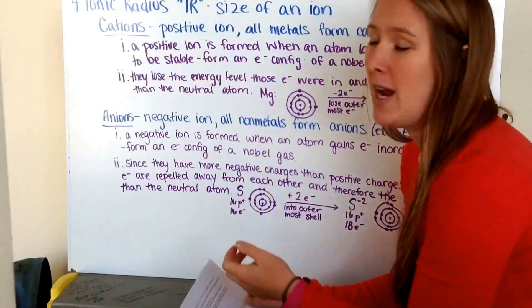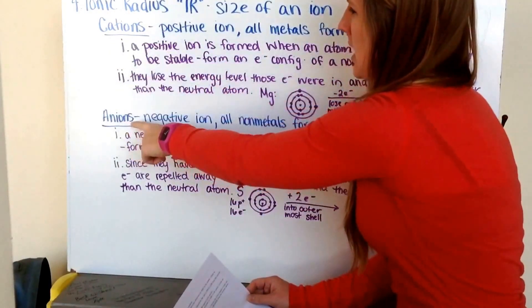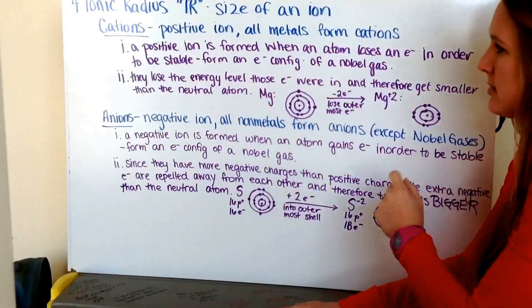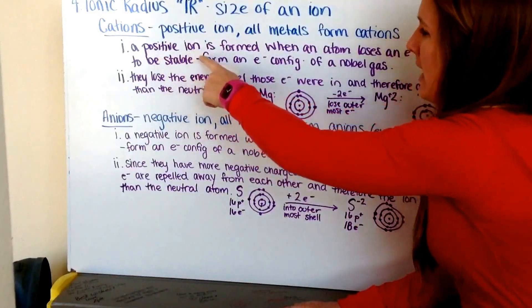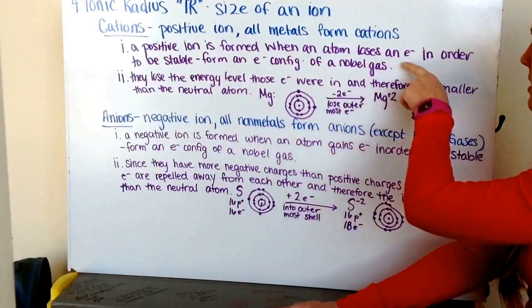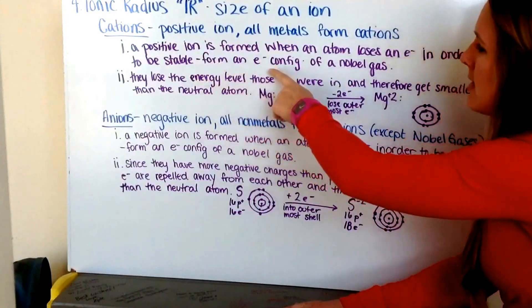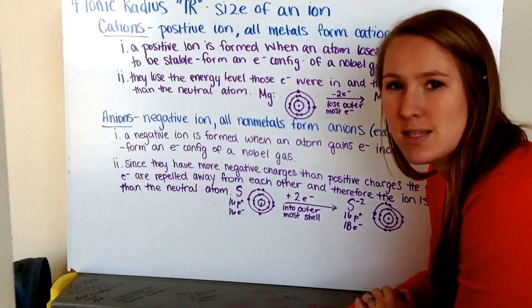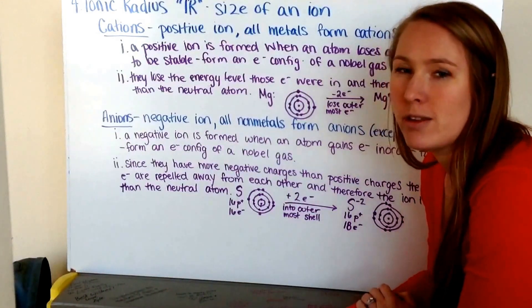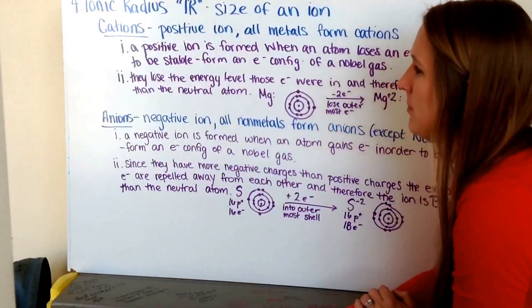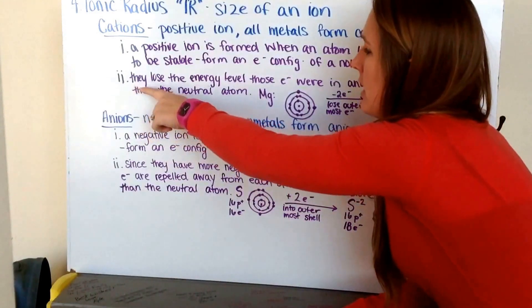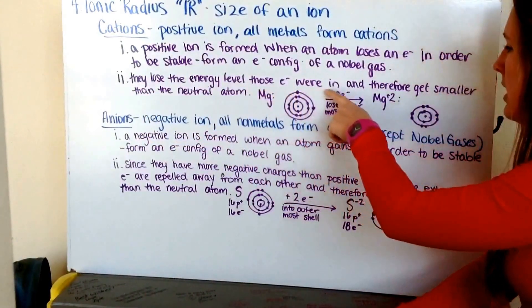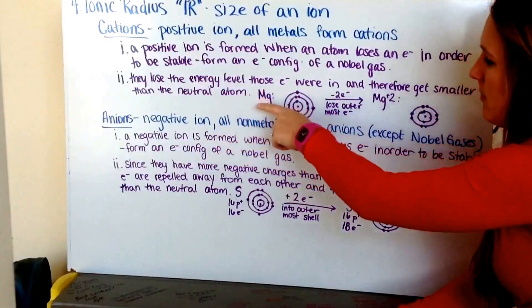We can have two different types of ions: cations and anions. A cation is a positive ion, and all metals form cations. This positive ion is formed when an atom loses an electron in order to be stable, or to form an electron configuration of a noble gas. Remember that noble gases have all their electrons paired and all their shells filled, so they are in their most stable form. When forming a cation, they lose the energy level that those electrons were in, and therefore get smaller than the neutral atom.